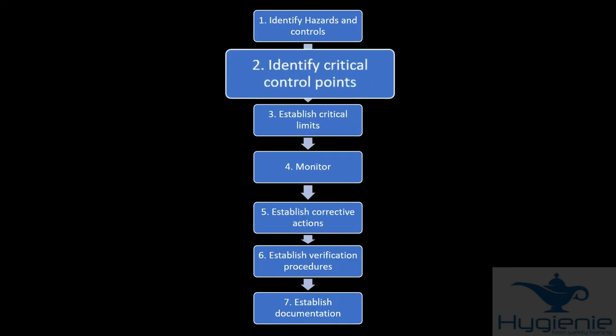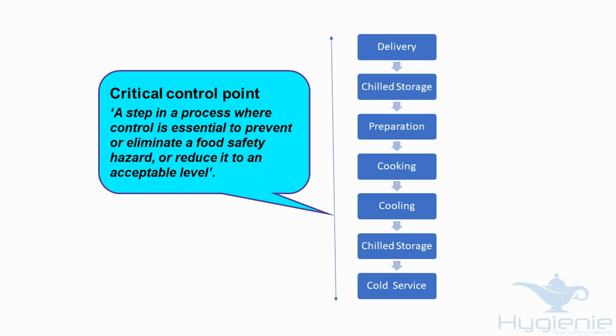Number two, identify critical control points. It's a step in the process where control is essential to prevent or eliminate a food safety hazard or reduce it to an acceptable level. In other words, it's the steps in the process at which if you control them, the food is safe.